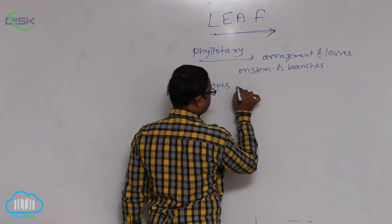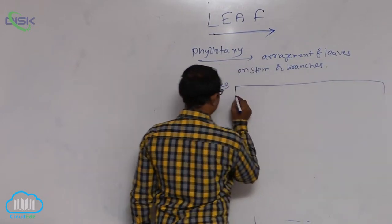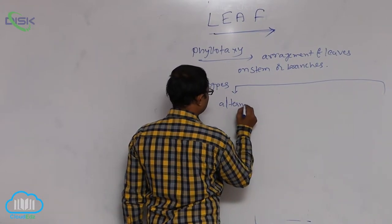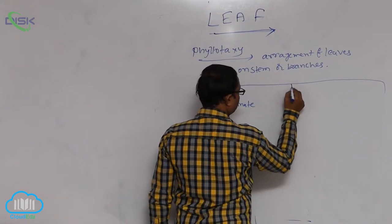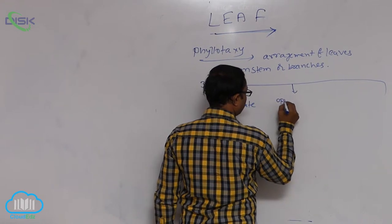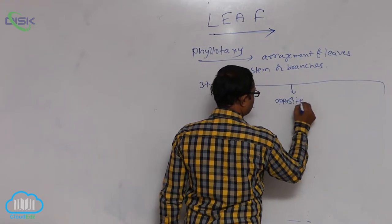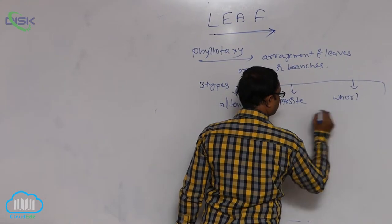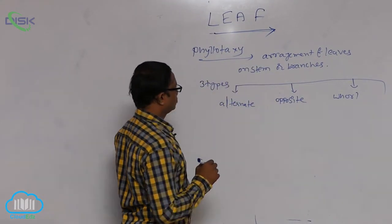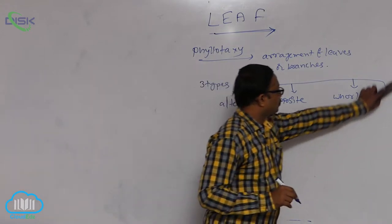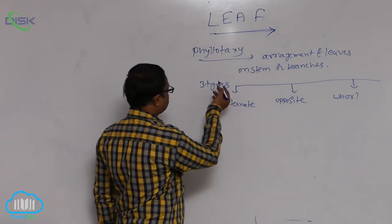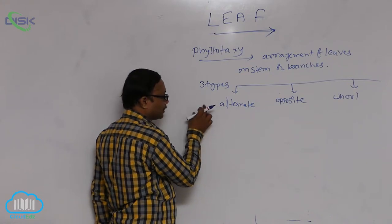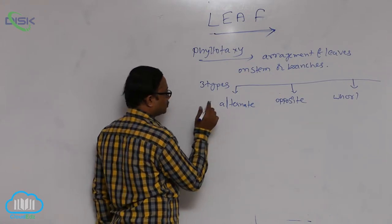The three types are: first, alternate phyllotaxy; second, opposite phyllotaxy; and third, whorled phyllotaxy. So phyllotaxy is divided into three types based on the number of leaves present at every node.